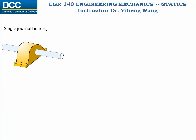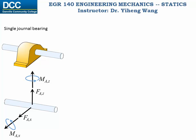Now let's look at several types of bearings. The first one is a single journal bearing. Because the bearing prevents translational motions in the two radial directions and only allows movement along the axial direction, and also prevents any rotation except for the rotation about the central axis of the shaft, this single journal bearing exerts force support reactions along the x and z directions and moment supports about the x and z axes as well.